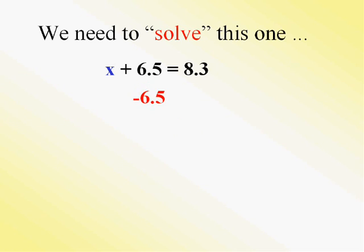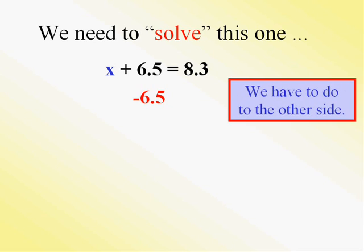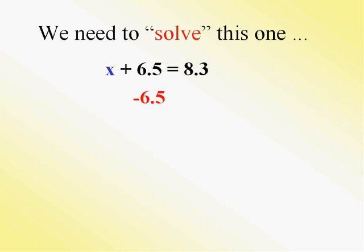So on the left side, I'm going to get rid of that 6.5. It's a plus 6.5 by subtracting 6.5. Well, if I do it on the left, I have to do it on the other side to keep the scale even. Now on the left side, they'll cancel out and I'll get my goal, which is to get x by itself. On the right side, 8.3 minus 6.5, I get 1.8.